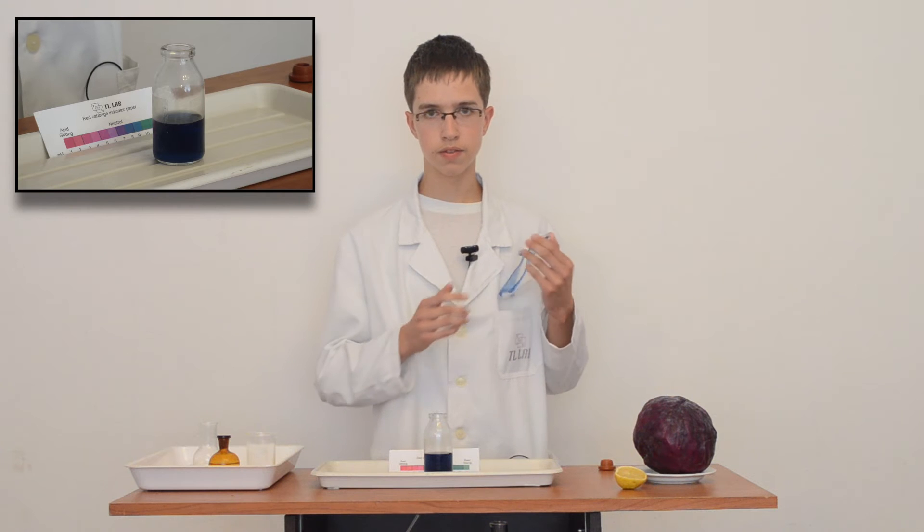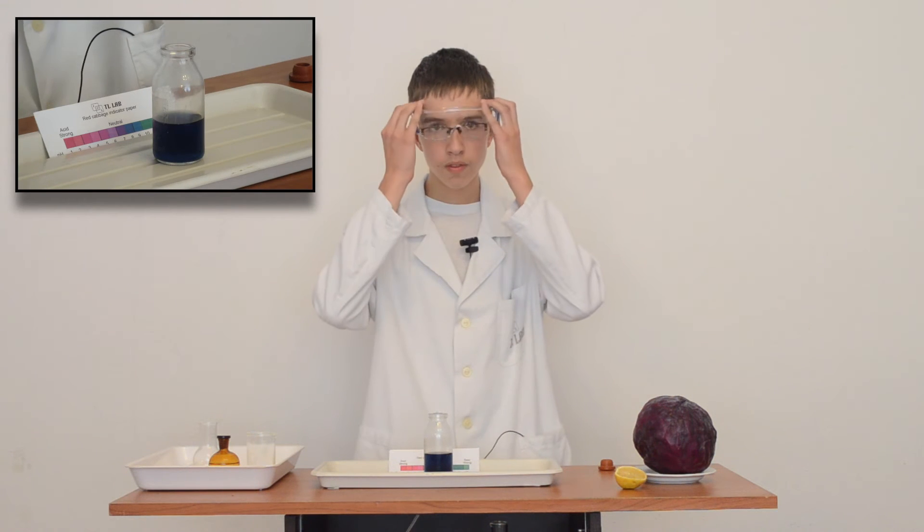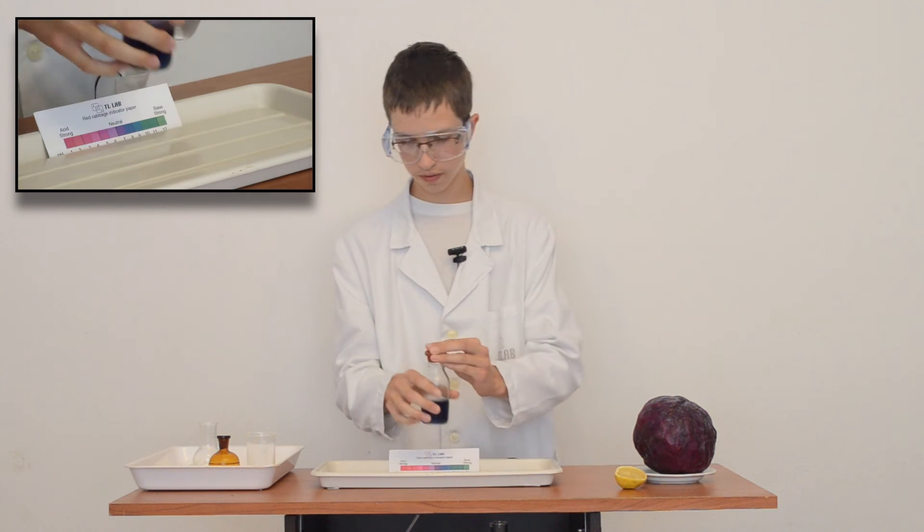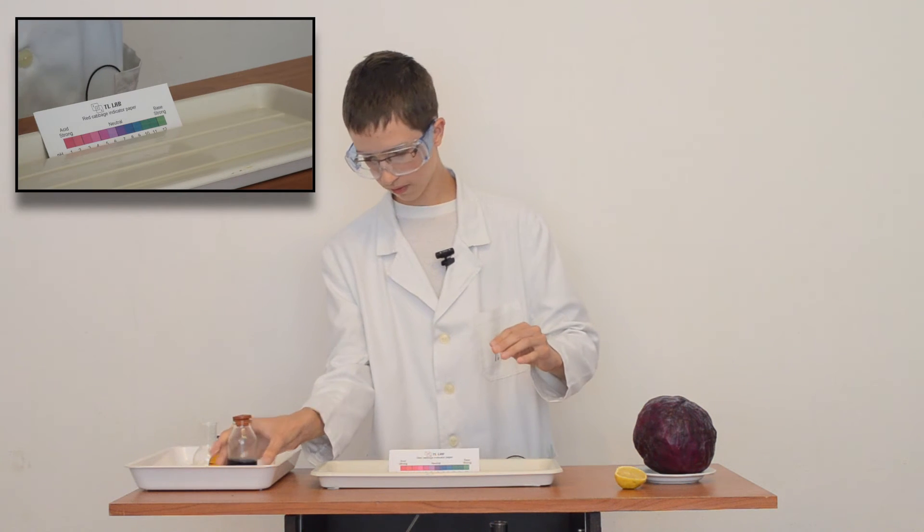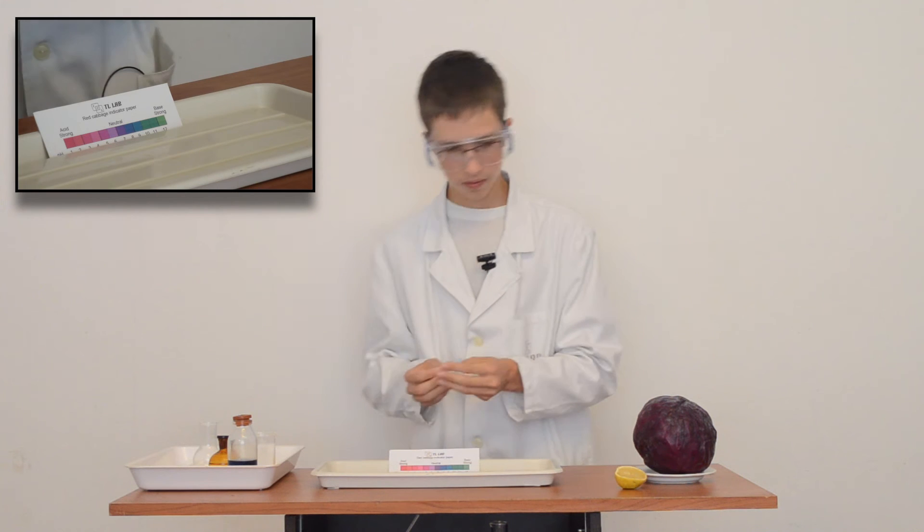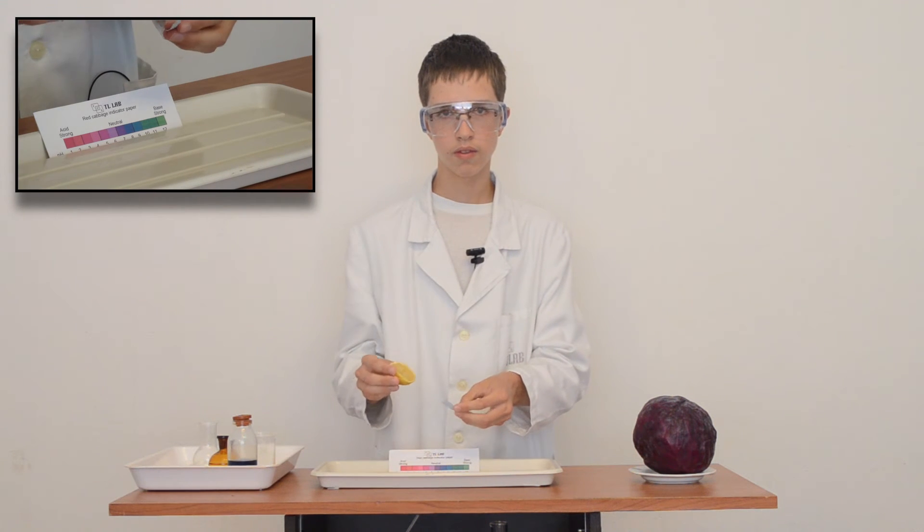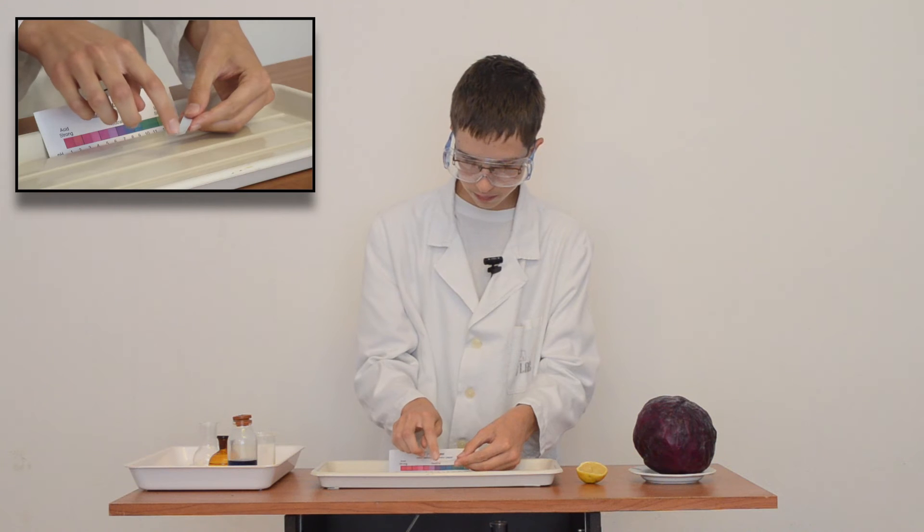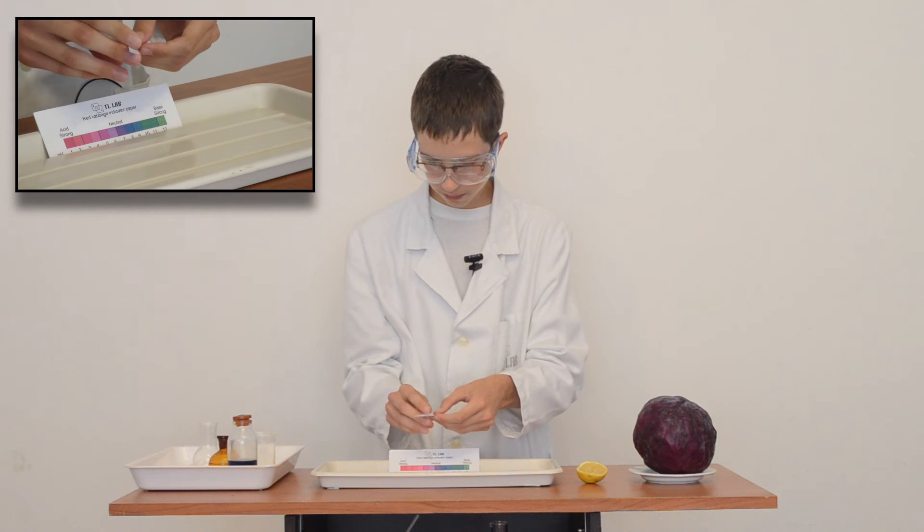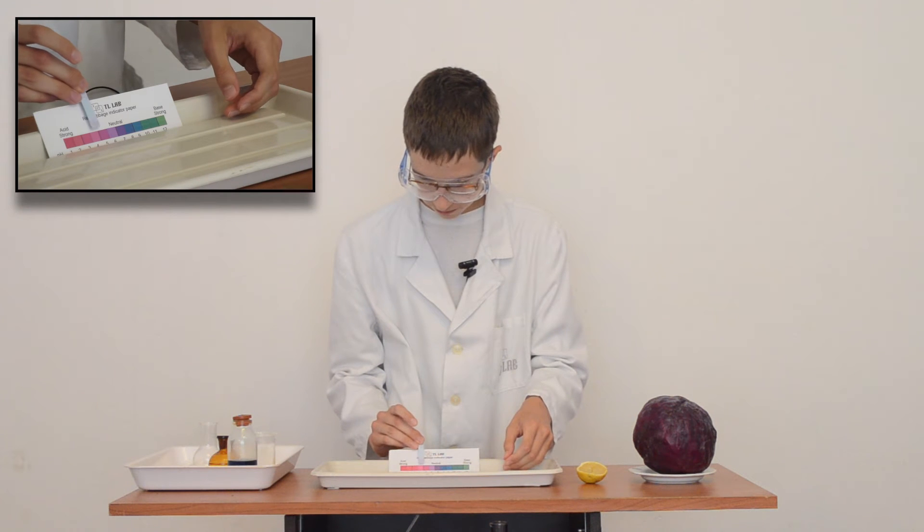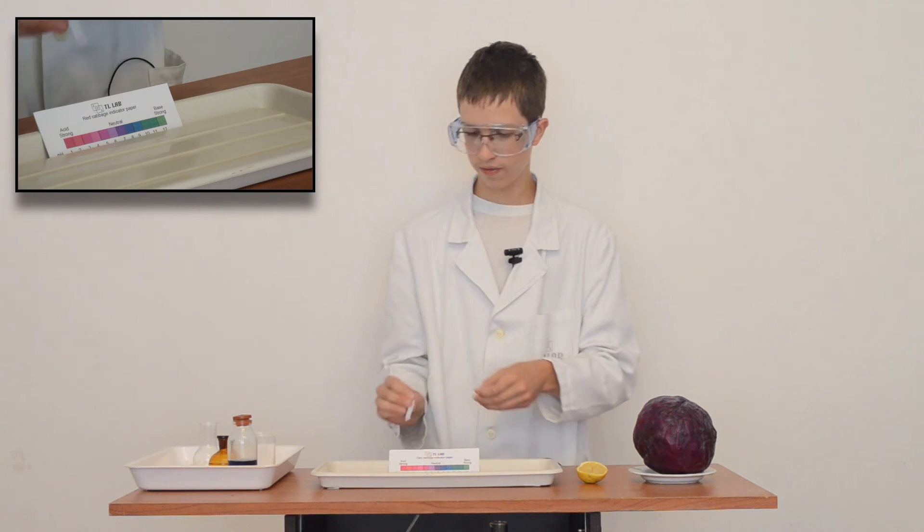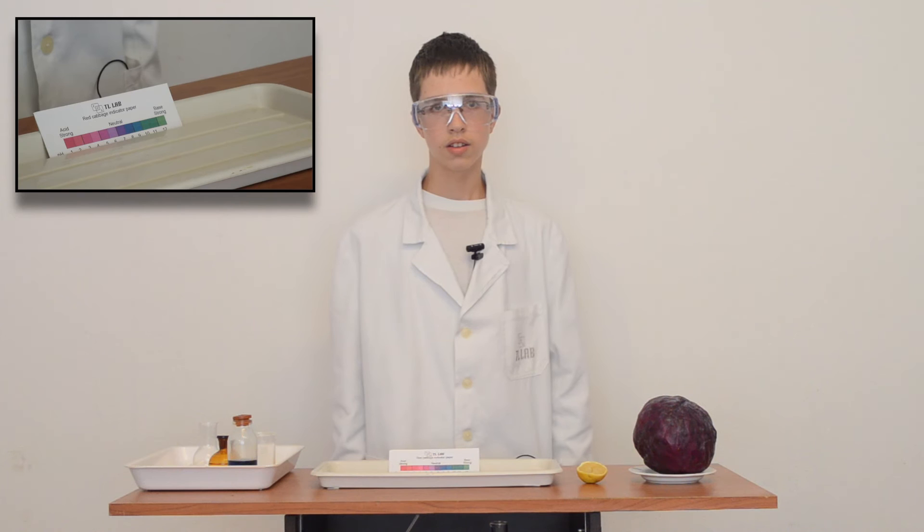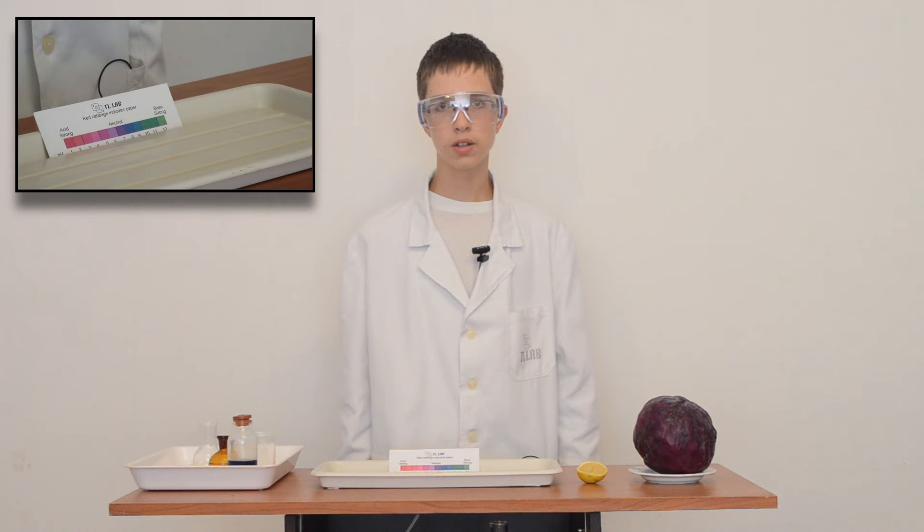First I'll show you how litmus paper reacts on acid from lemon. We can see change in color. And now you'll see a few examples with indicator liquid.